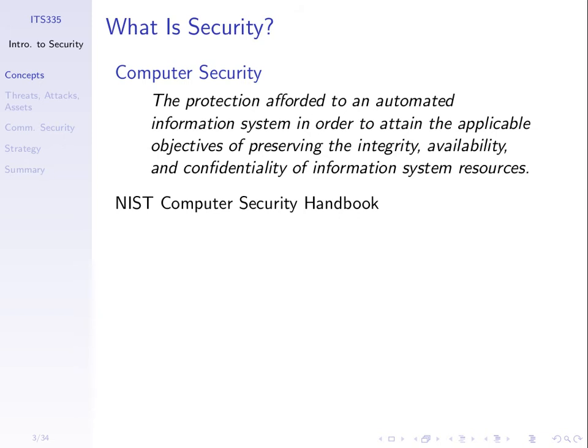A computer system, or generally an information system, has a set of resources: data, hardware, and software. Computer security is about trying to protect that information system such that we meet the objectives of preserving integrity, availability, and confidentiality. Those are the three key concepts of computer security.